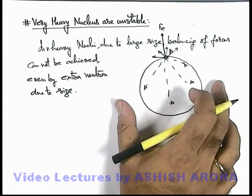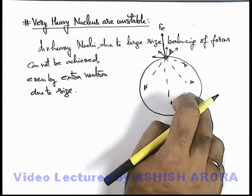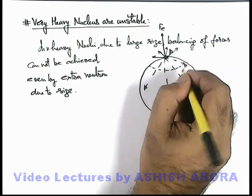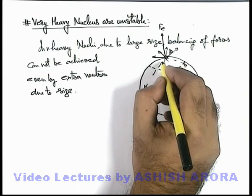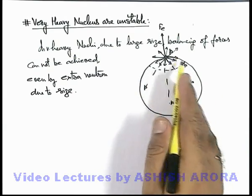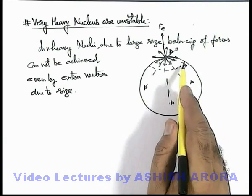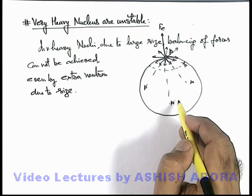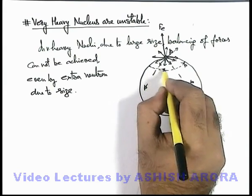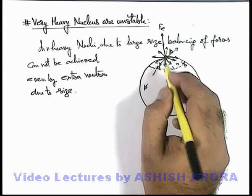But if the size is very large, a lot of other neutrons which are located away from this proton will not contribute in nuclear attraction. Only those nucleons which are there in the neighborhood of this proton will apply the attractive nuclear force onto this proton. So if the size is very large, the number of protons located in the other part of the nucleus will exert such high electrostatic repulsion which cannot be balanced by the neighboring nucleons. So it cannot be balanced.